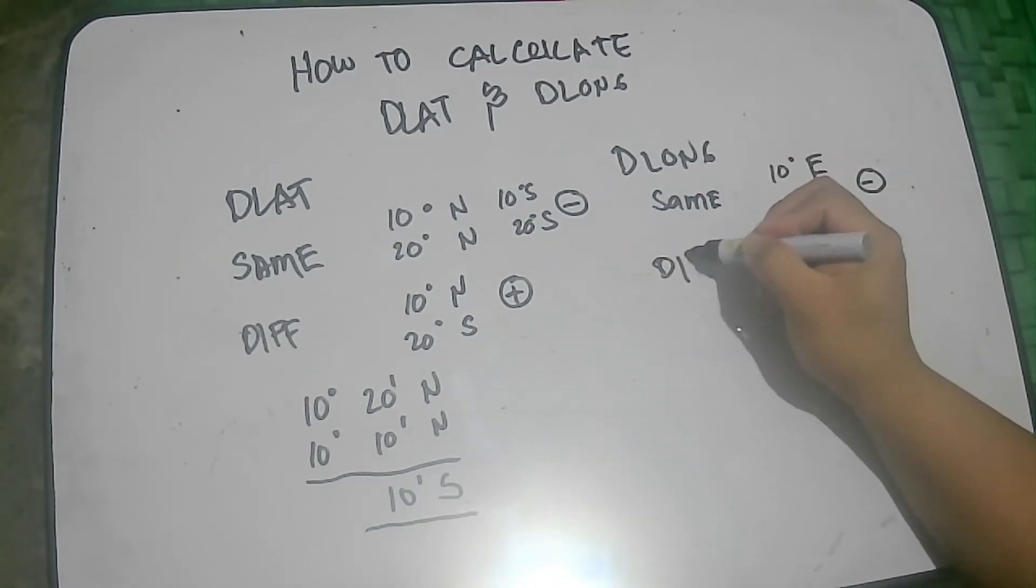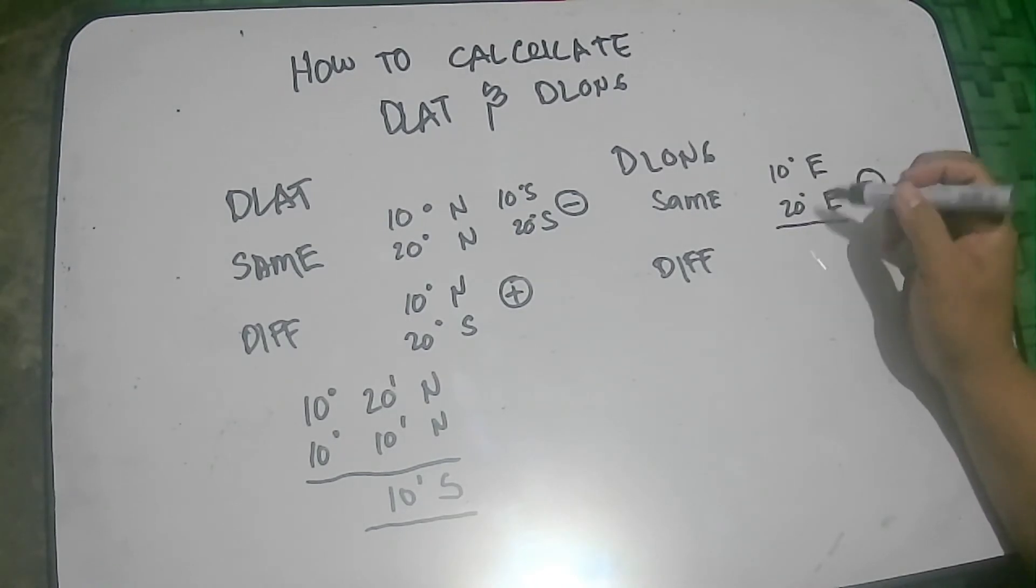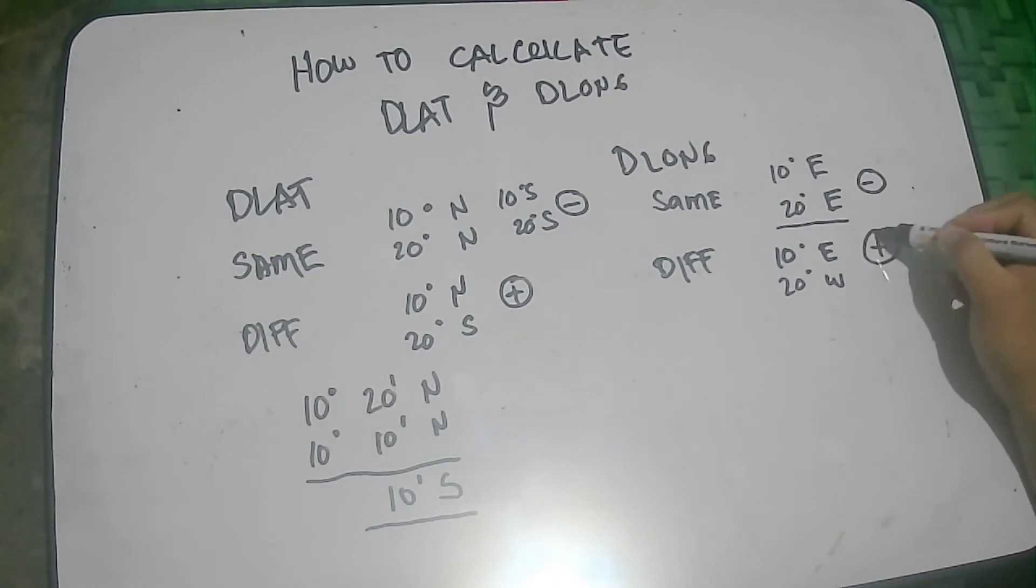Pagkaiba naman, different name siya. Pinagkaiba na 10 degrees east, then yung isan naman ay 20 degrees west, okay?